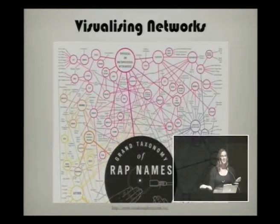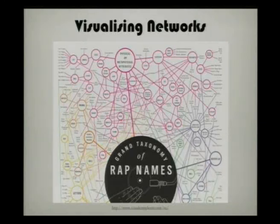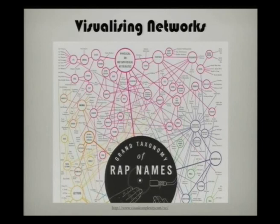One example of a network visualisation that I really like is the grand taxonomy of rat names. The way they've categorised the rat names is pretty cool — we've got wordplay over on the side, physical or metaphysical attributes like 'little Kim' and those kinds of things, coolness, letters if people are using letters in their name. You can just have fun going through and reading it. All of these examples I'm showing today have links, so you can go through and view them on the web and investigate them further if they take your fancy.